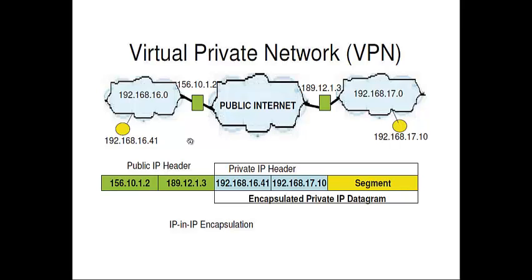The strategy is that each private network should have a gateway router with a public IP address facing the internet. So this is the public IP address of the gateway router for the first private network, and this is the public IP address of the gateway router for the second private network. When a host with a private IP address wants to send a packet to another host with a private IP address, it sends the datagram to its gateway router, which then encapsulates it inside another IP header, making it appear to the internet as if the two routers are communicating.